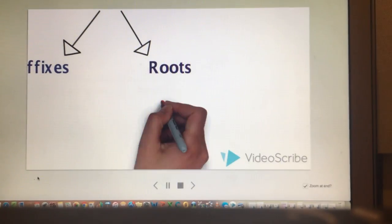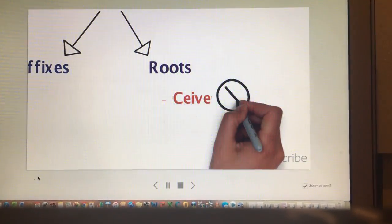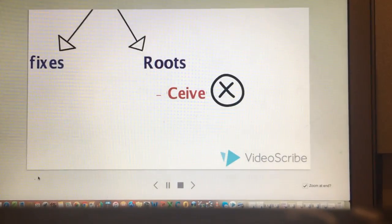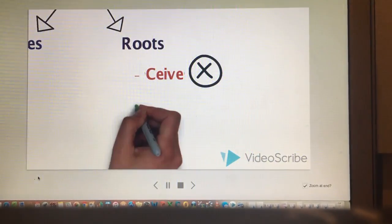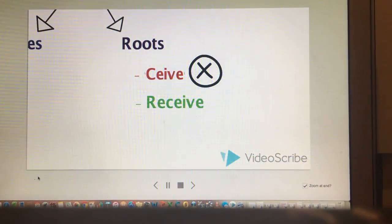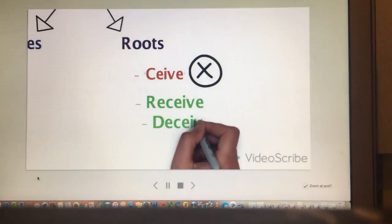For example, ceive. The word ceive cannot stand on its own. It is not a word. In order for it to become a word, it needs to be followed by other words. For example, receive and deceive. You cannot ceive something.